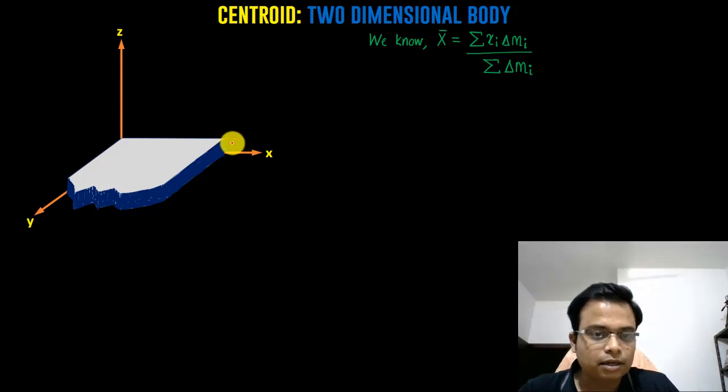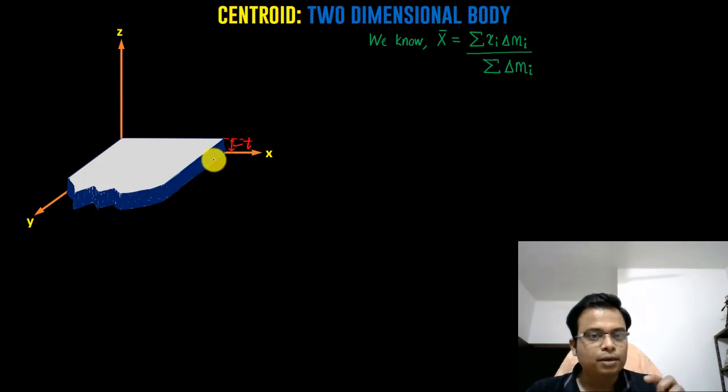The thickness is represented by t. This is a random plate of any shape, but one thing which is uniform is its thickness. What we wish to do is find its centroid.